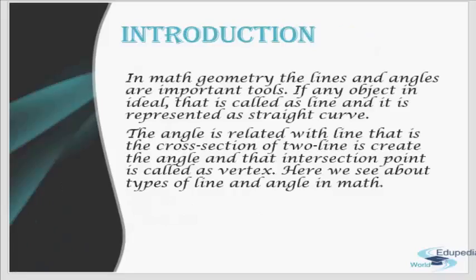In math and geometry, we know what a line is. If any object is ideal, that is called a line and it is represented as a straight curve. You don't have to focus too hard on the theoretical definition — we all know what a line is and can visualize it, so let's keep that in mind and move forward.